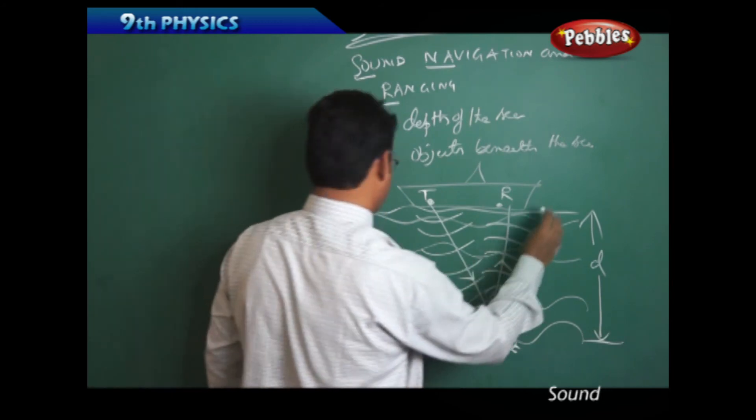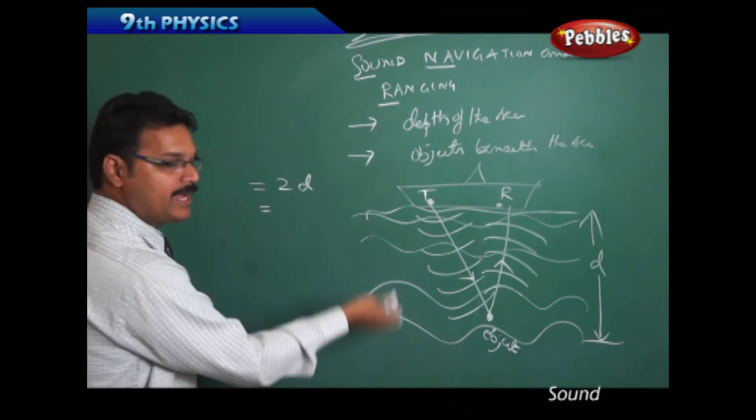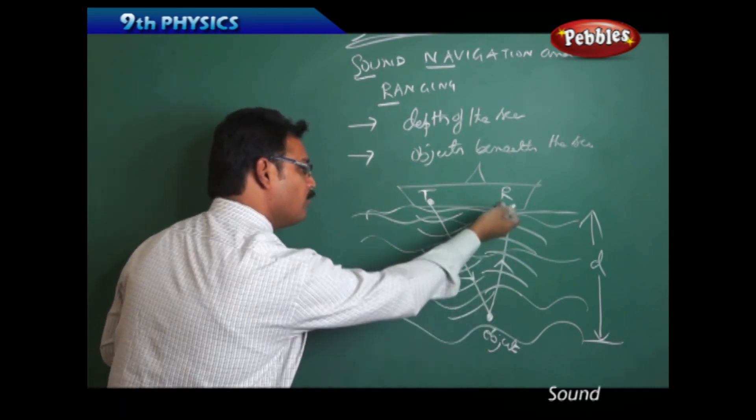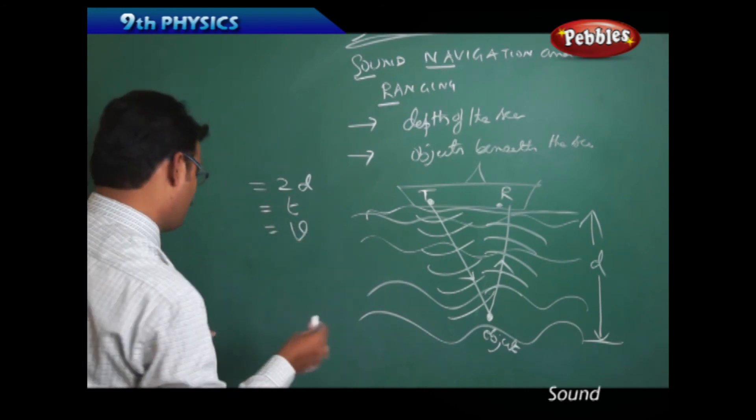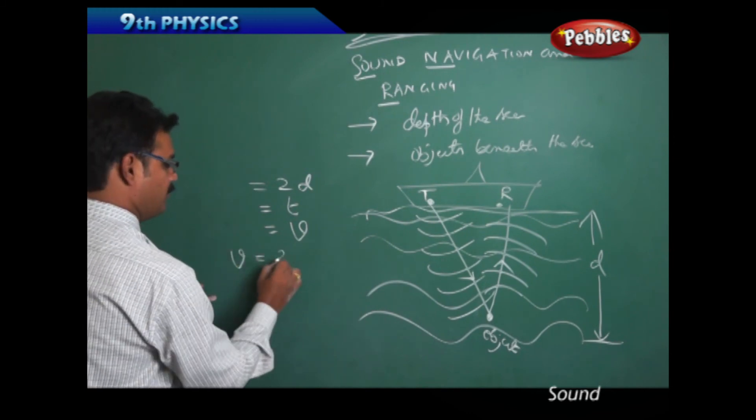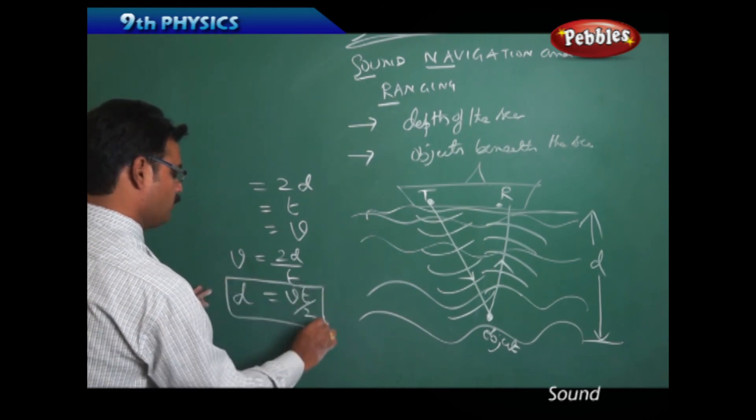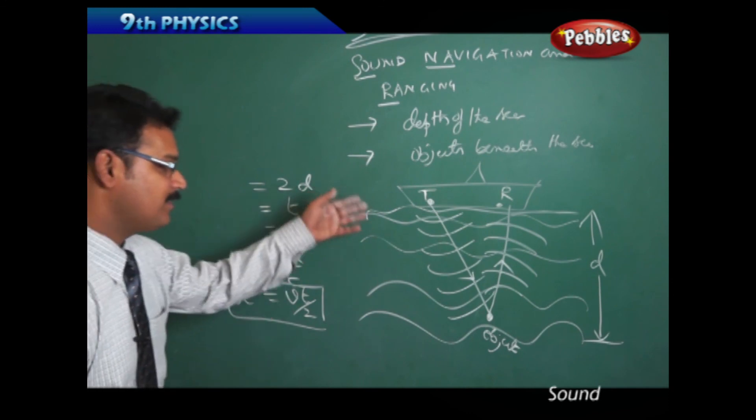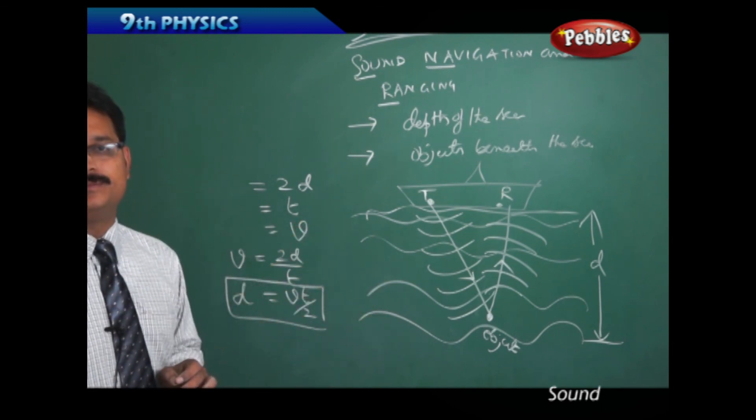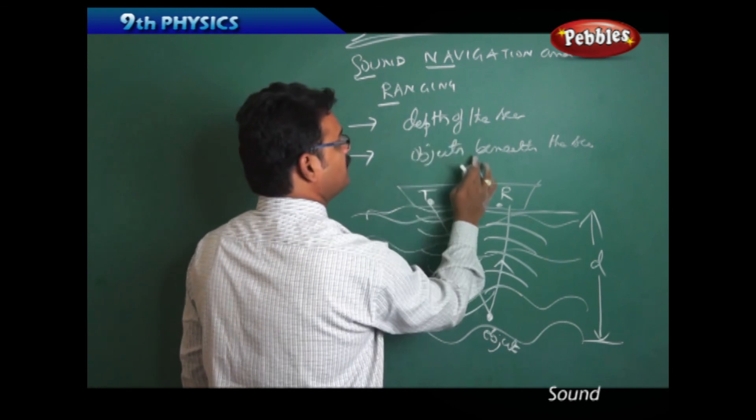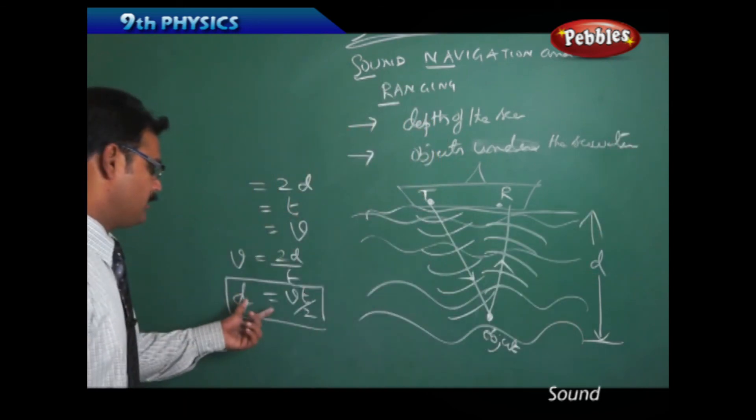The total distance is 2d, and the time taken for the reflected wave to go to receiver is t, and the speed of the ultrasonics is V. So we know the formula that V equals distance by time, therefore distance equals VT by 2. So using this formula, we can find the depth of the sea and also we can find where the different objects are under the sea water. You can find the depth of the sea and objects under the sea water using this formula.